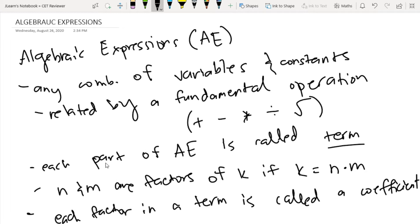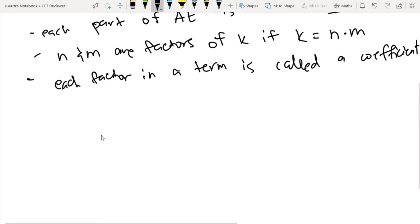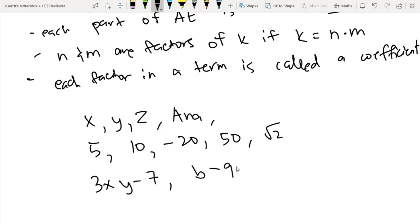I think it's much better na makita to in an example. So for example, we have variables x, y, z, kahit ano, basta letter or word. And then as usual constants you have 5, 10, minus 20, 50, square root of 2. Yan mga constants yan. So ang algebraic expression ay combination ng mga yan. So for example, 3xy minus 7, pwede yan. Or B minus y minus 9 all squared.